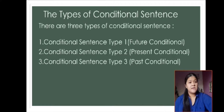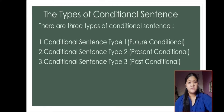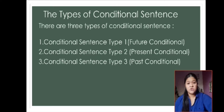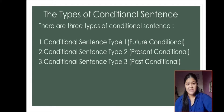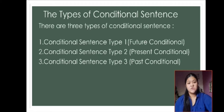In conditional sentences there are three types. The first one is conditional sentence type 1, or future conditional. The second one is conditional sentence type 2, or present conditional. And the last is conditional sentence type 3, or past conditional.